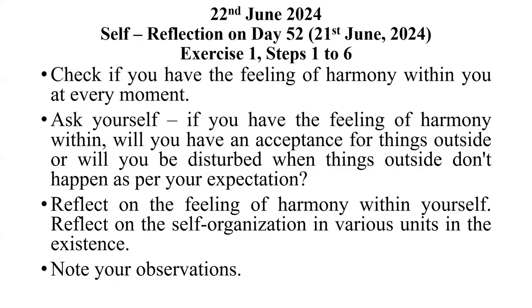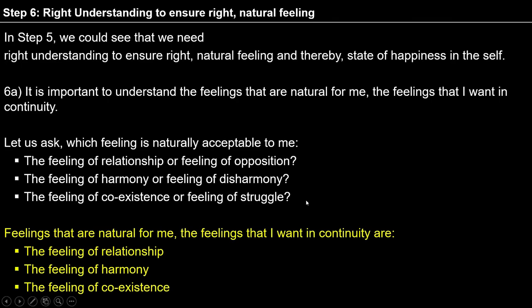So we are practicing step 6 of exercise 1. In step 6a, we are able to see that it is important to understand the feelings that are natural for me, the feelings I want in continuity. So we are asking: what is naturally acceptable — relationship or opposition, harmony or disharmony, resistance or struggle? Entering into the process, we naturally conclude — not analytically conclude — that it is ultimately feeling of relationship, feeling of harmony, feeling of coexistence that is naturally acceptable to me.